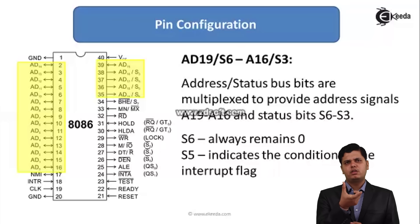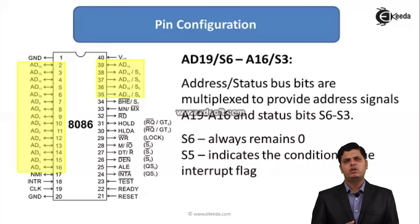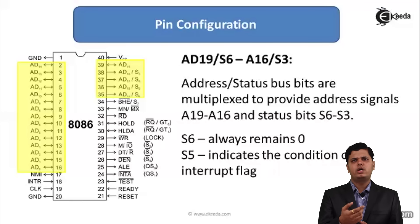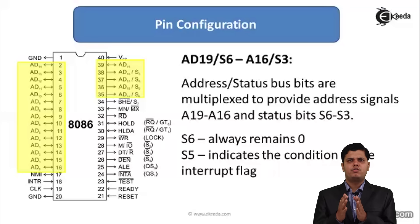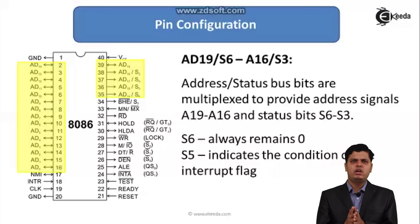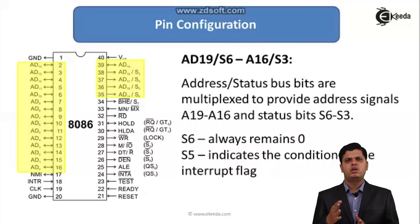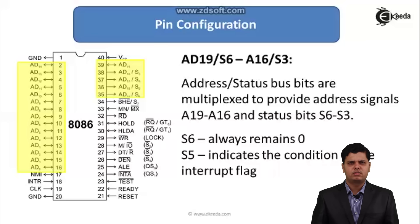By combining these 4 higher bits — A16 to A19 — with AD0 to AD15, we get the full 20-bit address. So the 20-bit address sent to the outside environment is sent from pins A0 to A19 of the 8086.